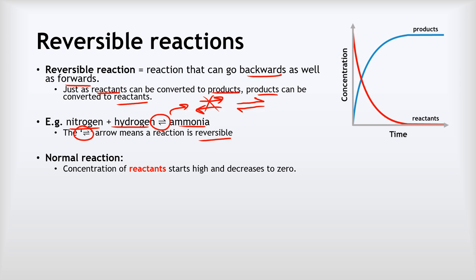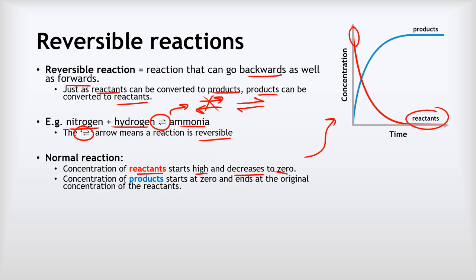If we look at a normal reaction and measure the concentration of reactants over time, we'd see that the concentration of reactants starts out high and decreases over time to zero. And equally, if we look at the products, the concentration of products starts out at zero and ends up somewhere close to the original concentration of the reactants. The reason for this is because all of the reactants get converted into products.